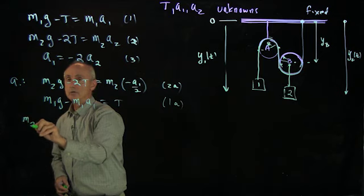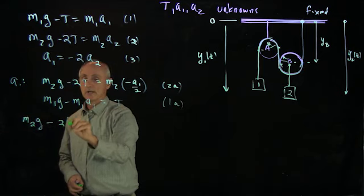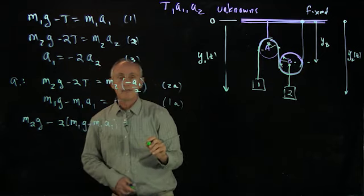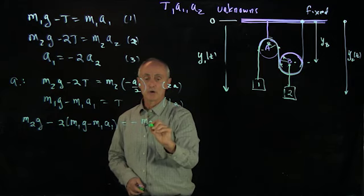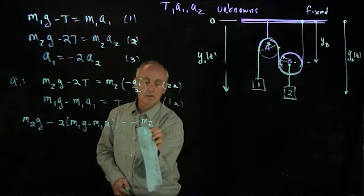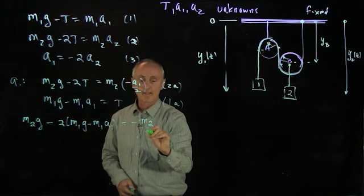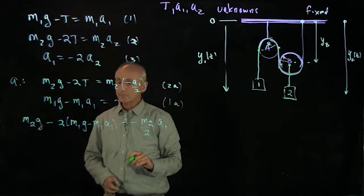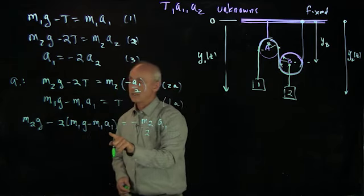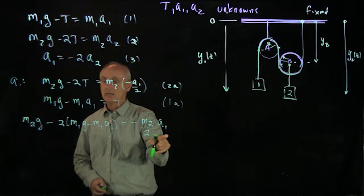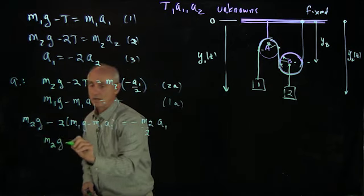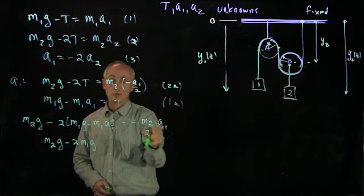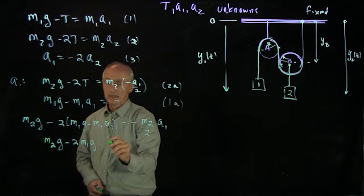And I get m2g minus 2 times m1g minus m1a1, and that's equal to minus m2 over 2 times a1. And now I'd like to collect my a1 terms. And what I have over here, let's bring all the a1 terms to this side, and I get m2g minus 2m1g. I have a plus, so I'm going to bring that over to this side.